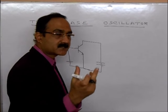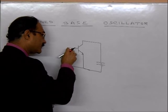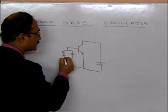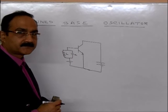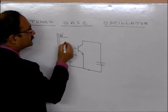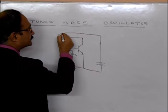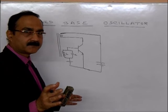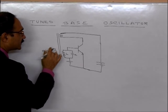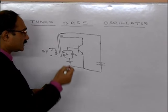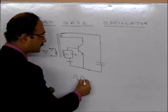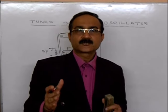For the tuned base oscillator, draw the LC circuit — capacitor C and inductor L — at the base. For the inductive coupling, on the same core draw a small coil connected to the collector of the transistor. The output is taken from the collector side. Since the tuned circuit is connected to the base of the transistor, this is called the tuned base oscillator, and it produces oscillations in the same way through feedback.